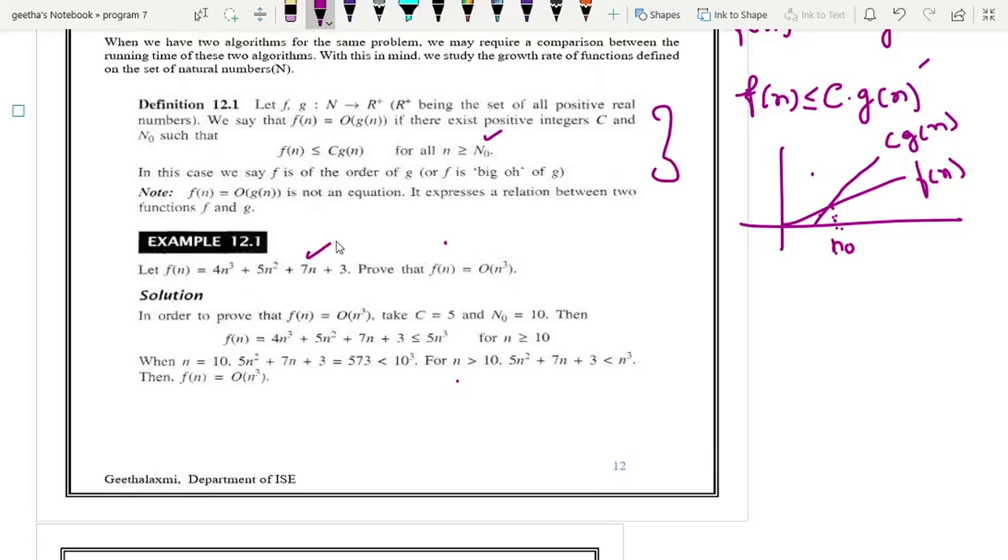You know what is f of n? Order of n cube is nothing but order of g of n. Now you understood what is g of n. g of n is nothing but n cube. You have to find some c value and you have to find some n naught value. You have to find c value and n naught value such that this c and g of n value need to be greater than the f of n.